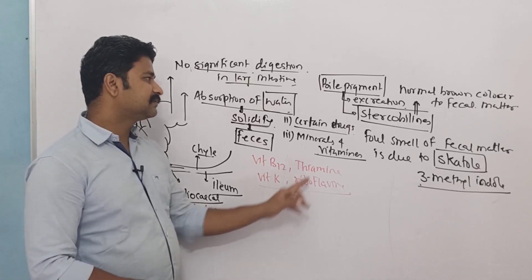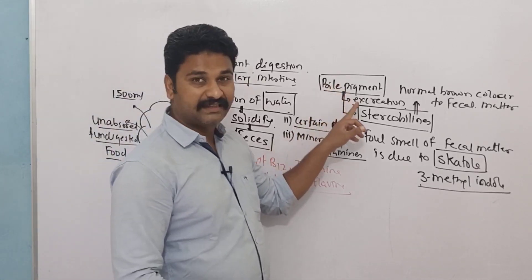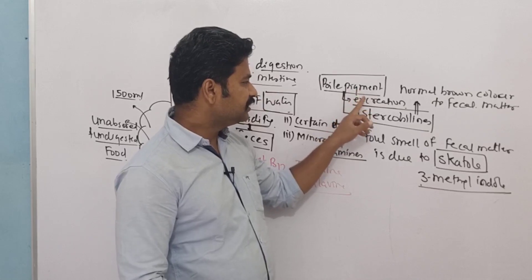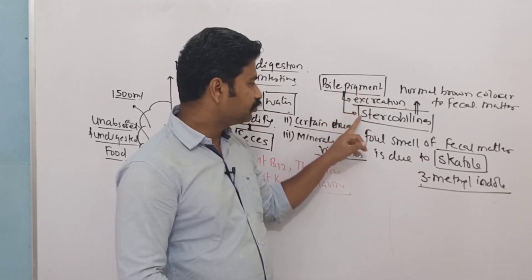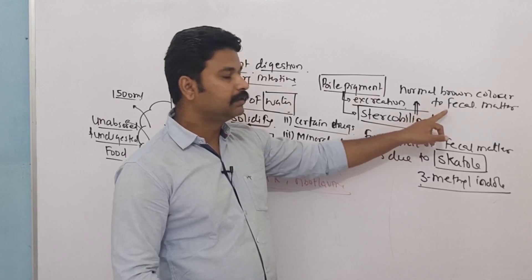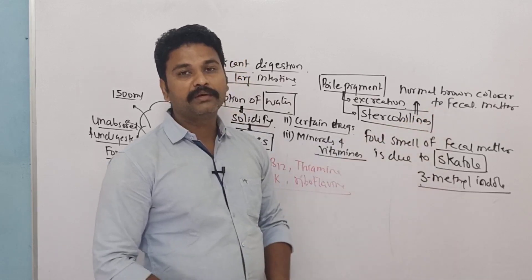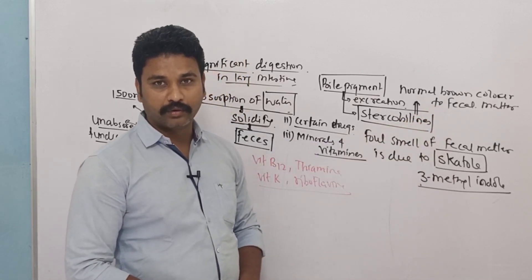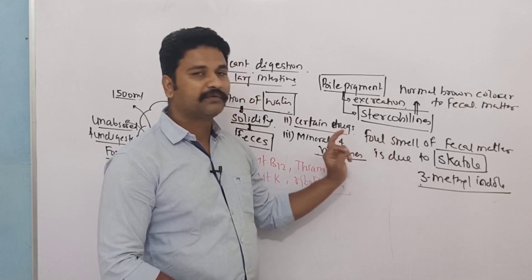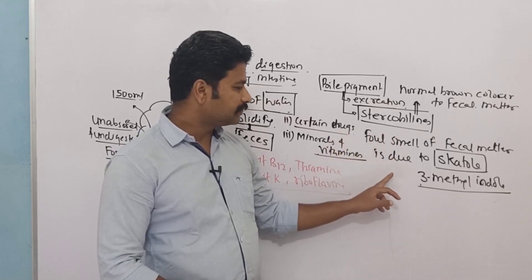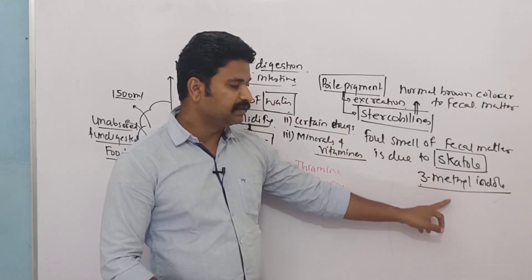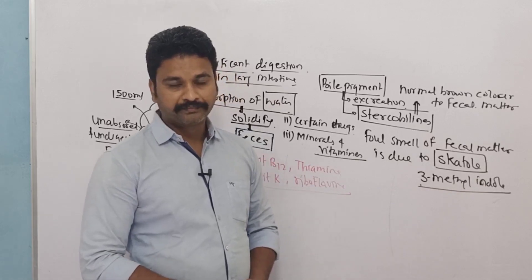The large intestine also helps in the excretion of bile pigments. These bile pigments are broken down into stercobilins, which provide a normal brown color to our fecal matter. The foul smell of fecal matter is due to scatole, which is actually the compound 3-methylindole.